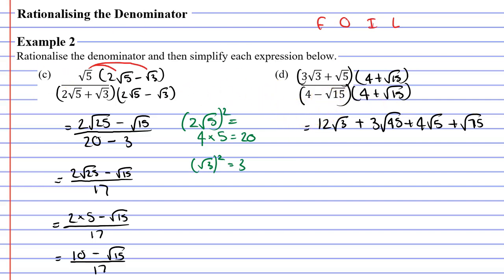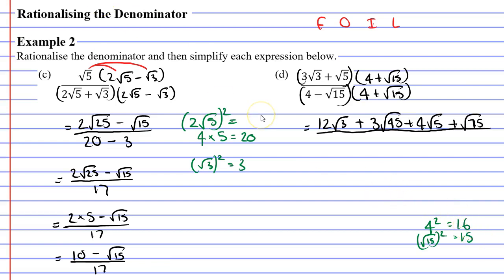Moving on to our denominator now. We have two terms: 4 and root 15 — the same two terms in each set of brackets — so we square them separately. Squaring 4 gives us 16. Squaring root 15: squaring undoes the square root, so we get 15. Our two numbers are 16 and 15, and we subtract them: 16 minus 15. The beauty of this question is that the denominator becomes 1.